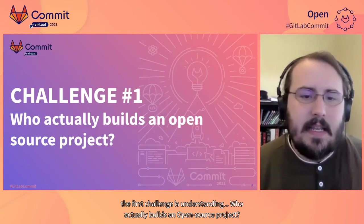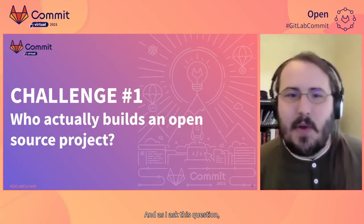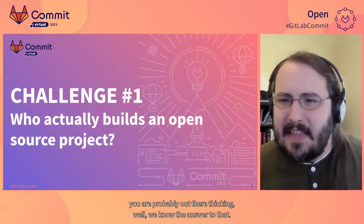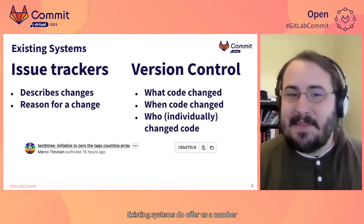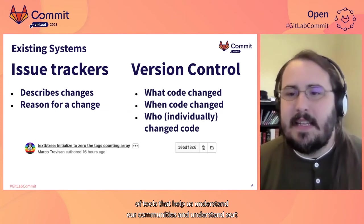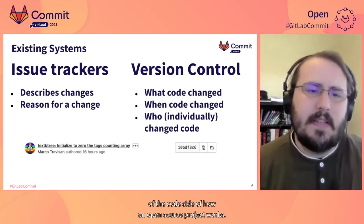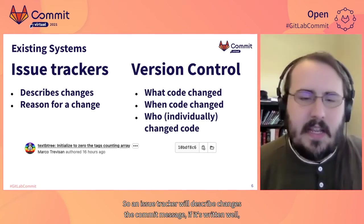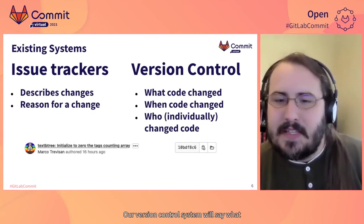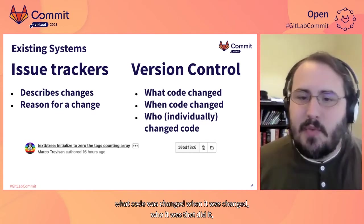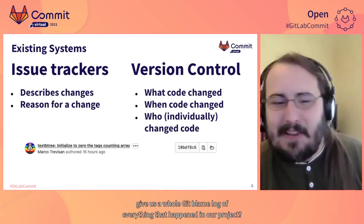The first challenge is understanding who actually builds an open source project. You might think we know the answer — you know how to read a Git commit log. Existing systems do offer tools that help us understand our communities and the code side of how an open source project works. An issue tracker will describe changes; the commit message, if written well, will have a good reason for that change; our version control system will say what code was changed, when it was changed, and who it was that did it — giving us a whole Git blame log of everything that happened in our project.